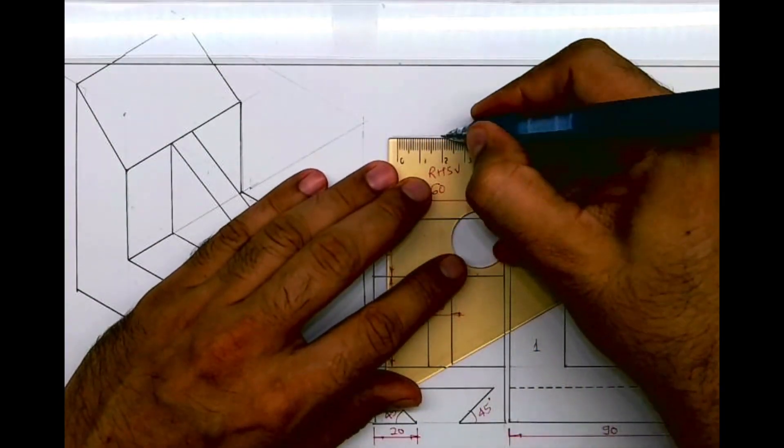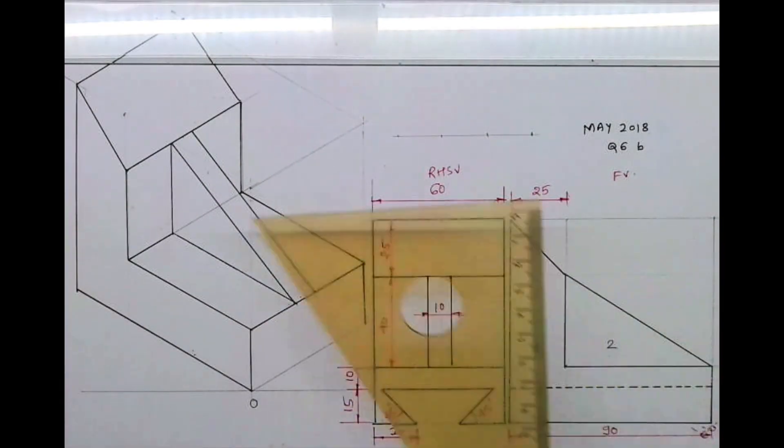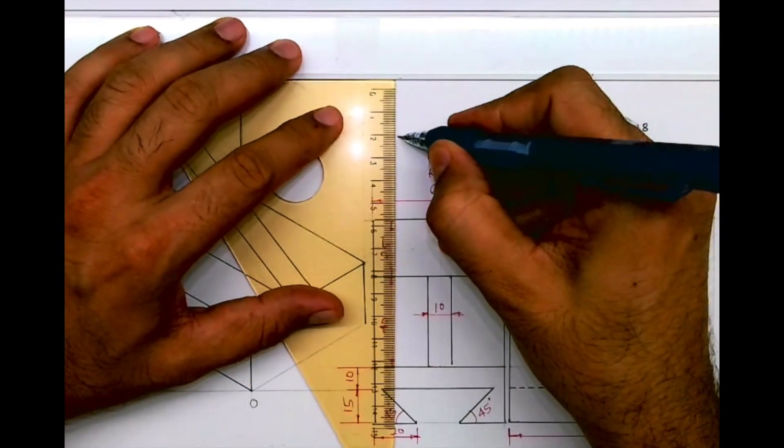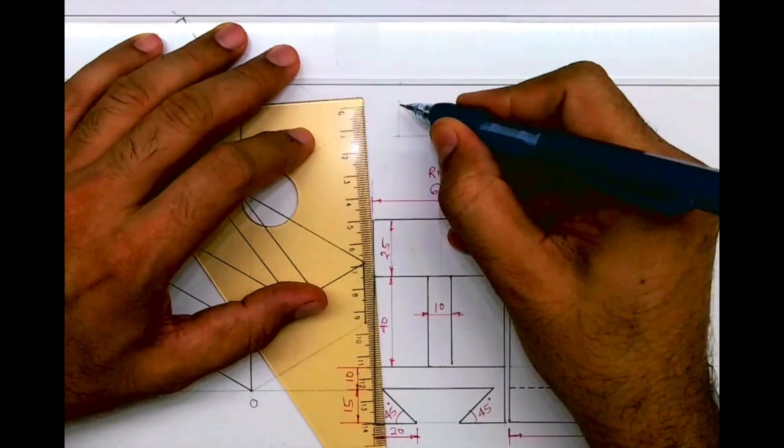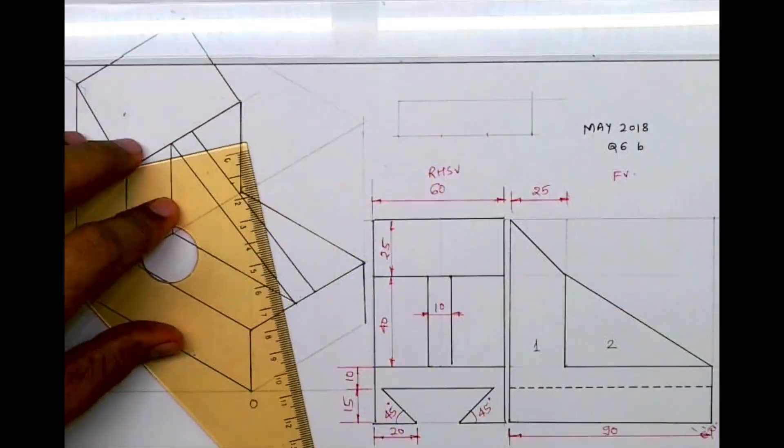Now if you see, we need to draw this outside. We'll take 20, 20, 20. Height is 15. We'll draw a horizontal line and then we'll take 45, 45 degrees.